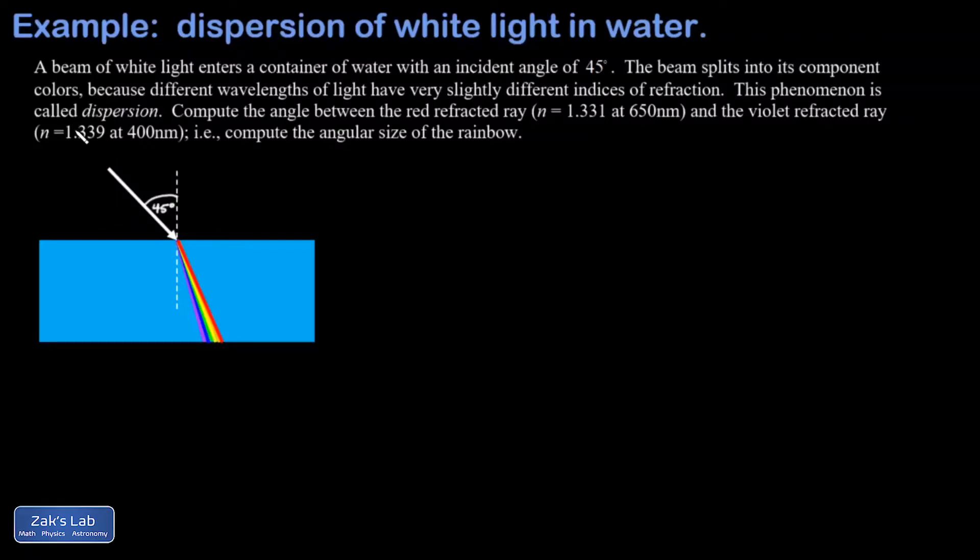In this video we're looking at the dispersion of white light when it enters water. I have a beam of white light coming into this interface between air and water at an incident angle of 45 degrees. We're going to assume the index of refraction for air is approximately equal to 1, and then this spreading out of the colors in the white light or the dispersion of the white light is caused by the fact that different colors